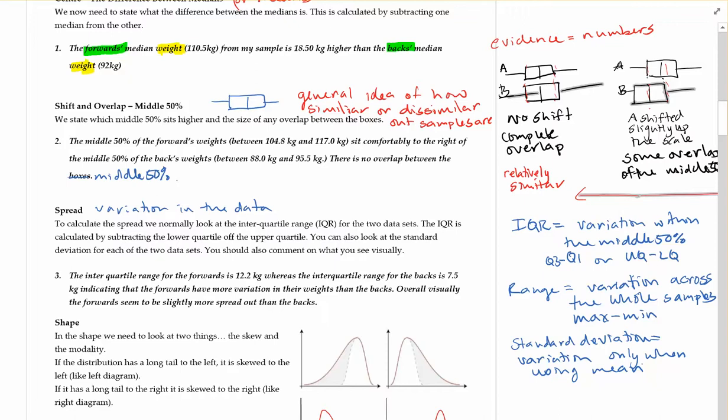So here, since we're talking about medians, we'll look at our IQR and our range. The interquartile range for the forwards is 12.2 kgs, whereas the interquartile range for the backs is 7.5 kgs. So where does the 12.2 come from and the 7.5 come from?